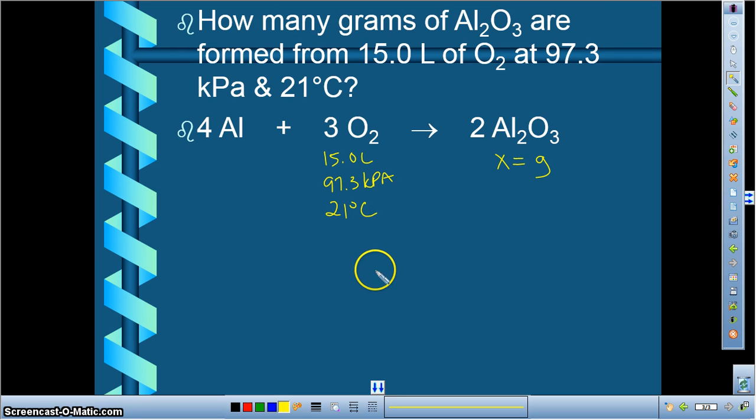Alright, so again, we know that in order to find grams over here, I'm going to have to do a mole-to-mole ratio between oxygen and the aluminum oxide that we have over here. The only problem is I don't know how many moles of oxygen I have, but this actually tells me how many moles of oxygen I have because I have enough information to use the Pregnert formula to find out how many moles of oxygen are held at this condition.